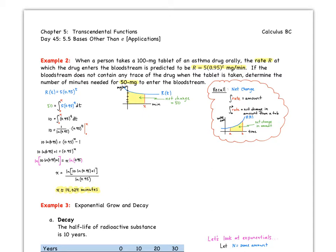When a person takes a 100 milligram tablet of an asthma drug orally, the rate R at which the drug enters the bloodstream is predicted to be R equals 5 times 0.95 to the T milligrams per minute. If the bloodstream does not contain any trace of the drug when the tablet is taken, determine the number of minutes needed for 50 milligrams to enter the bloodstream.